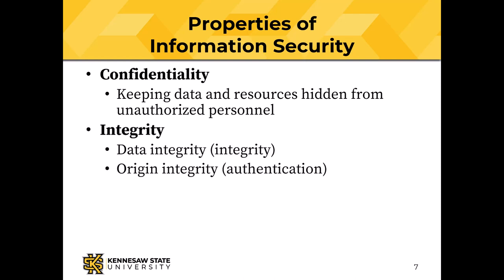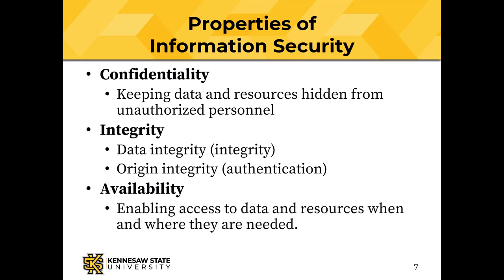Integrity means something different from the ordinary meaning of the word. Data integrity means we can trust that data and that it has not been changed without proper authorization. Origin integrity means we can trust that information comes from the source it claims to come from. The third property is availability: access to data and resources is available when and where needed — and also, the slide doesn't say so, but with suitable response time. If something is slower than molasses, it isn't really available.